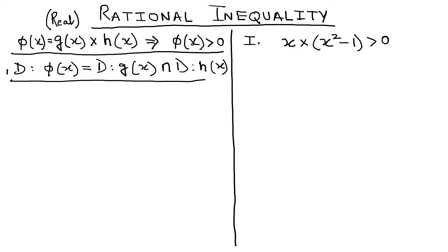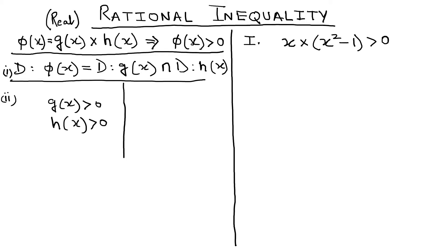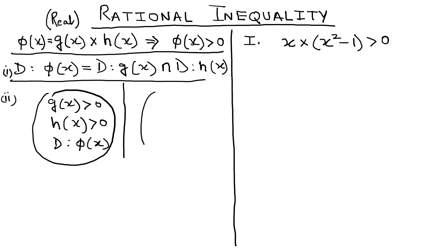The second thing expected is to make two cases. The product of two numbers is positive only when both numbers are positive or both are negative. So the first case is: g(x) > 0 and h(x) > 0, and then we look for the solution set as the intersection of these with the domain of φ(x). This gives you solution set S1.